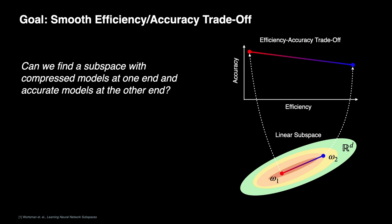So we set out to develop a training procedure that would allow us to compress a model to arbitrary compression rates with little to no additional overhead. We did this by casting our problem into a neural network subspace problem. We first considered a linear subspace, which is characterized by two endpoints, each of which is a neural network with the same architecture.